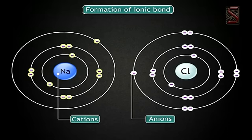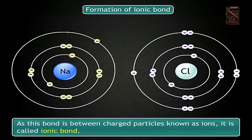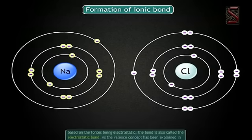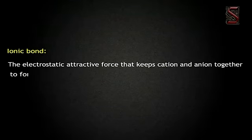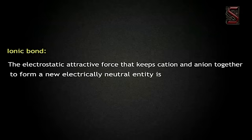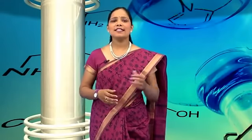The positive ions (cations) and negative ions (anions) that are formed experience electrostatic forces and get attracted to form a chemical bond. As this bond is between charged particles known as ions, it is called an ionic bond. Sometimes, based on the forces being electrostatic, the bond is also called the electrostatic bond; and since it is explained in terms of electrons, it is also called the electrovalent bond. The electrostatic attractive force that keeps cations and anions together to form a net electrically neutral entity is called an ionic bond.